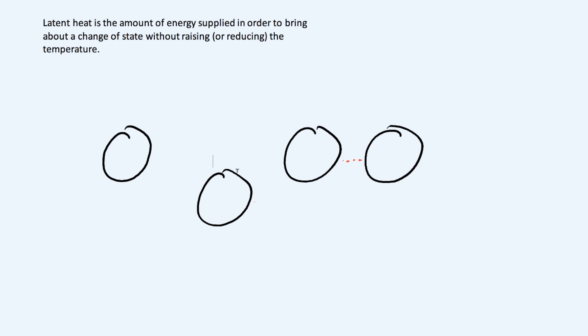There's also latent heat when a liquid turns into a gas. It's the same deal — you're going to break those bonds again without changing the temperature when going from liquid to gas during boiling. That's another latent heat.